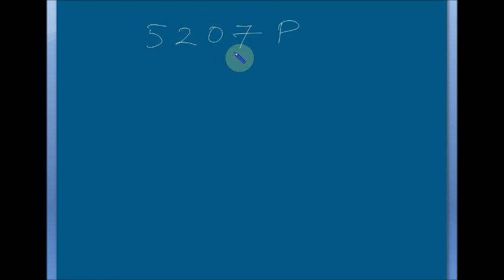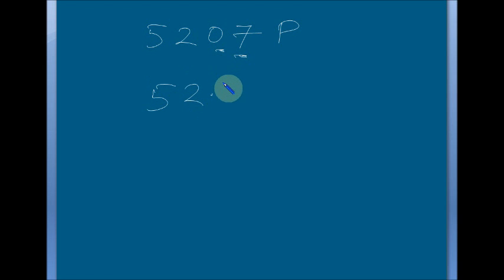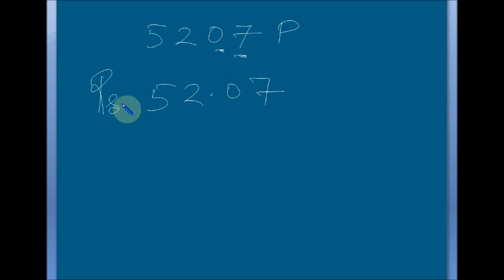Another example: suppose there is 5,207 Paise. You have to convert it into Rupees. Count from the right side: 7 is the 1st digit, 0 is the 2nd digit, so your decimal point will be here. That means it is 52.07 — omit the Paise label and it becomes Rupees 52.07.